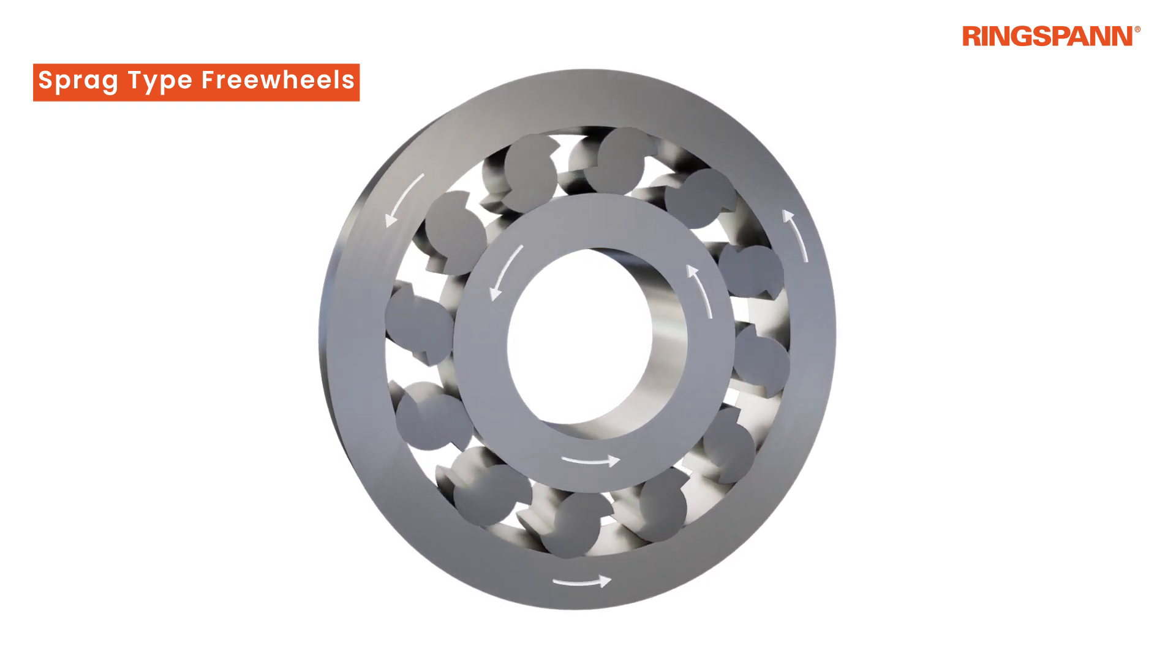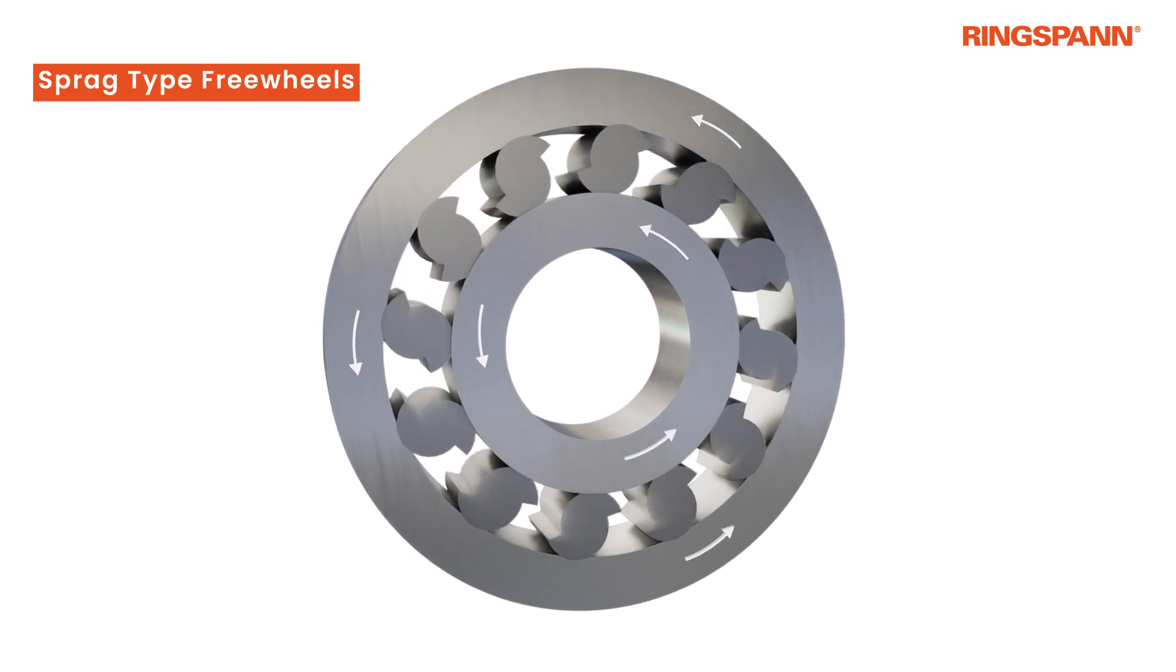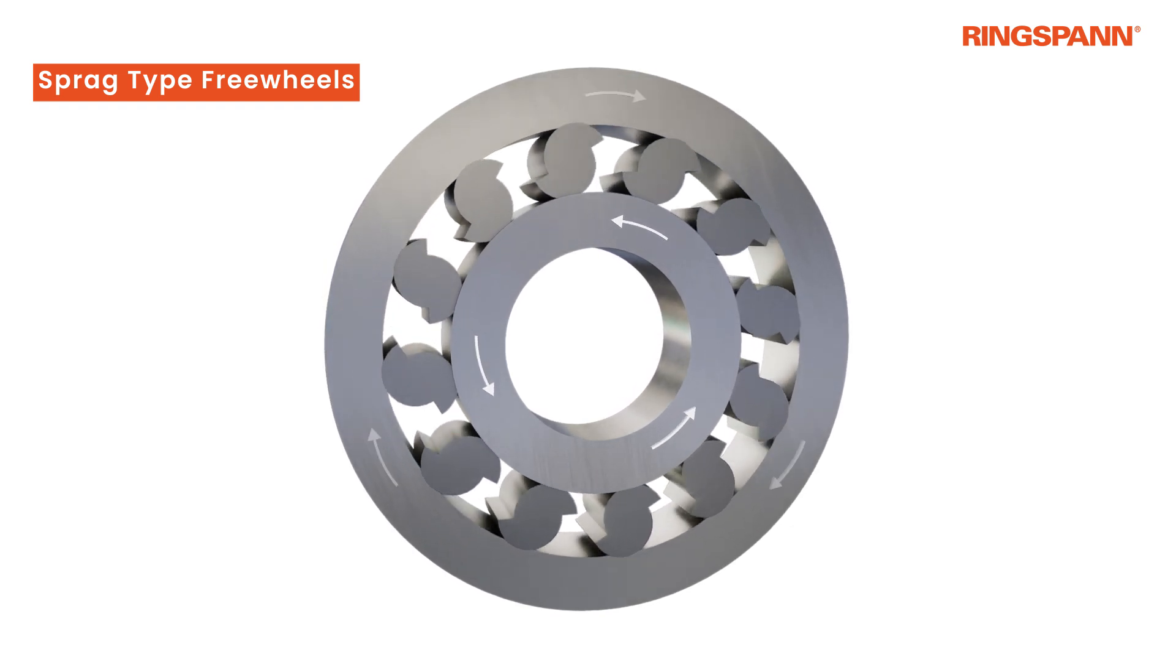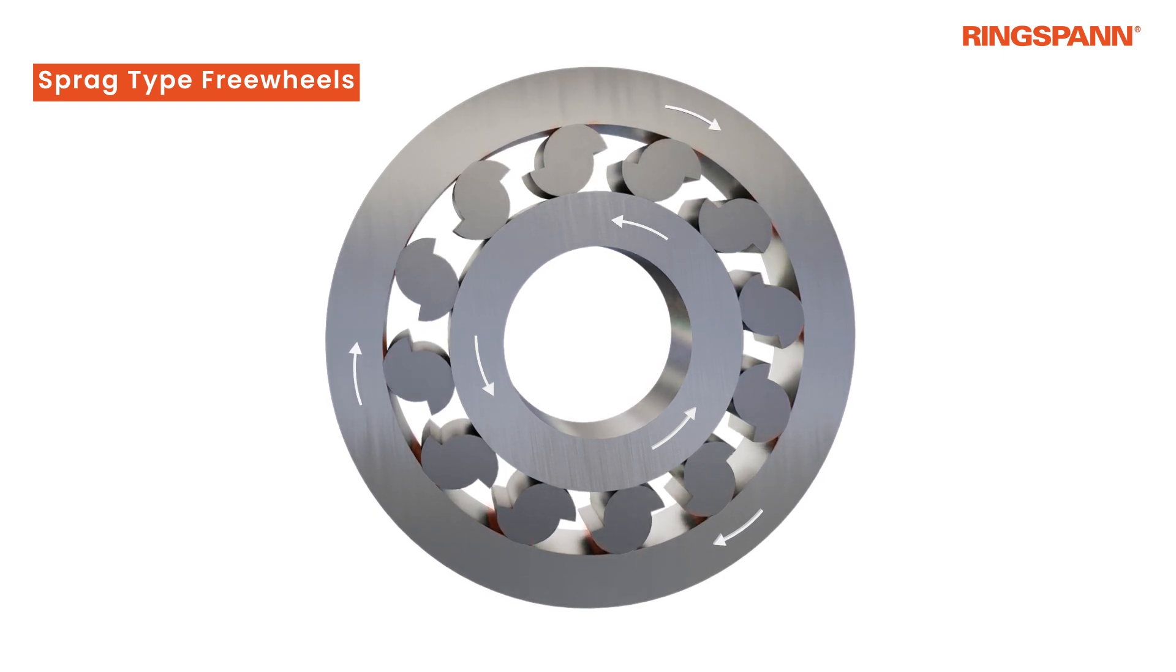Thanks to their special design, the distance between the contact points of the Sprague will increase and the freewheel locks. If the outer ring is turned clockwise, the distance between the contact points is decreased and the freewheel opens.